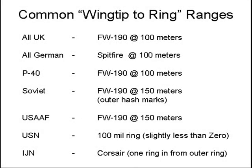While I can't go through every single aircraft on every single sight, here's what I found. British aircraft seem to have the FW-190 at 100 meters. German fighters have the Spitfire at 100 meters — that's called turnabout. The Soviets are kind of strange; they've got the FW-190 at 150 meters to the outer hash marks — those little tick marks on the inside. The Navy's got a 100-mil ring, slightly less than a Zero. The Japanese use a Corsair one ring from the outer ring, where that outside ring is like an extra border. You just got to look through and see what your aircraft is doing.